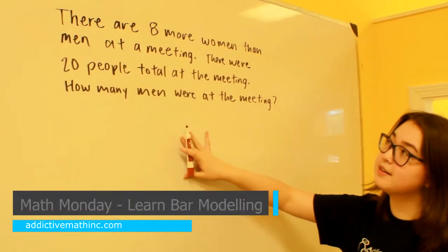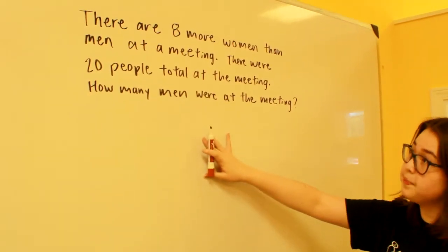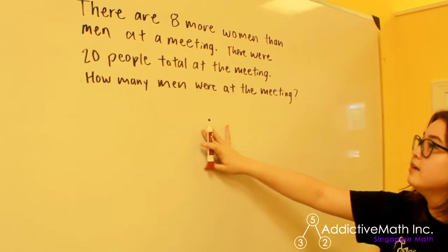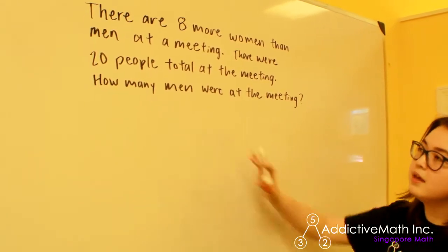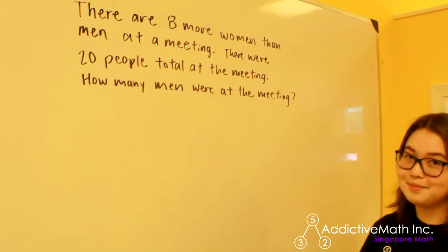So we have a problem here that says there are eight more women than men at a meeting. There were 20 people total at the meeting, and they want to know how many men were at the meeting.